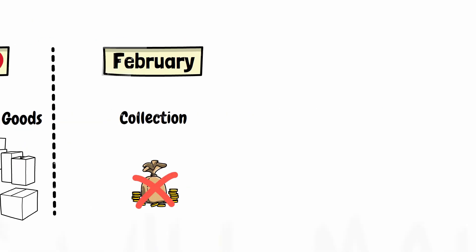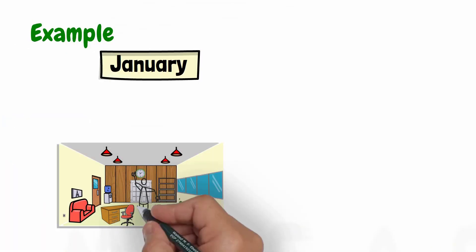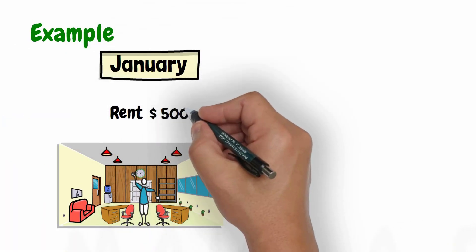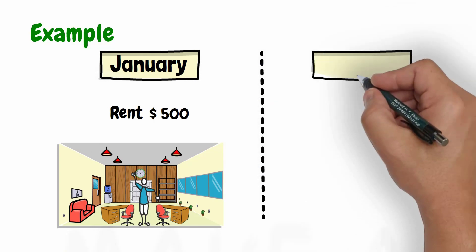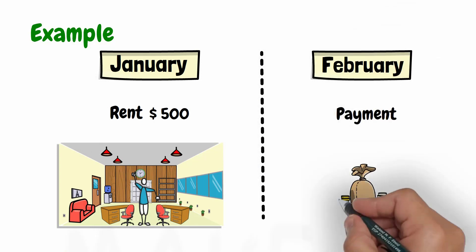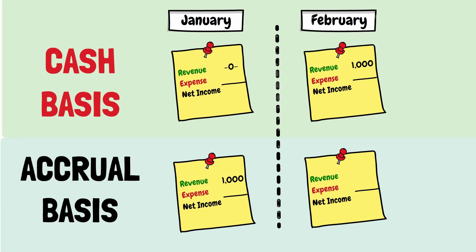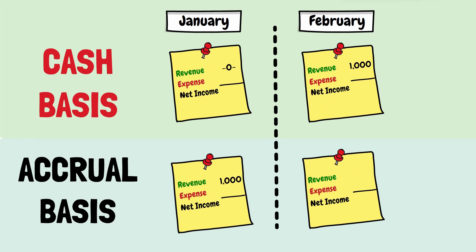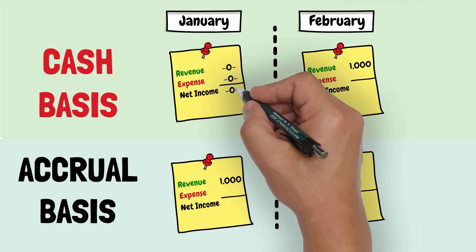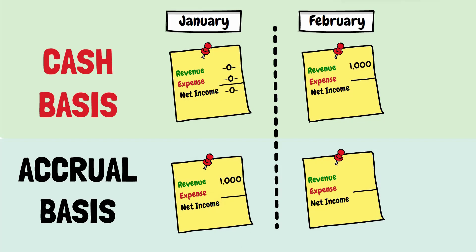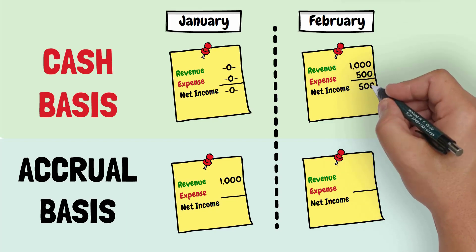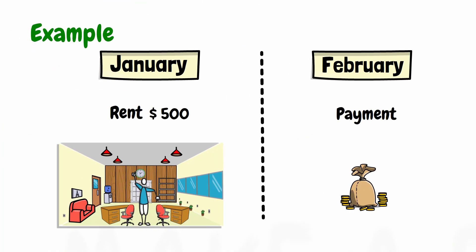Let us continue our example. Suppose that the company incurs rent expense of 500 during January, but made the payment on the 1st of February. Under the cash basis, the income statement for January will not show any rent expense as the rent was not paid in cash during January. This expense is shown on the statement of February, the month during which the rent payment was made.